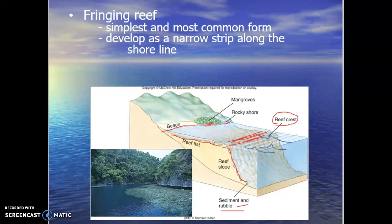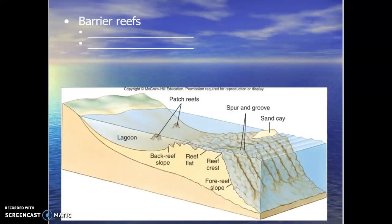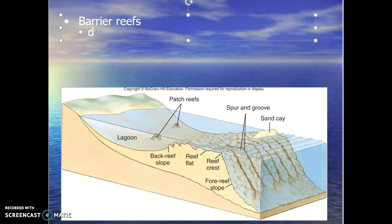It's a constant change — a dynamic environment that is constantly shifting based on environmental conditions. The fringing reef is a narrow strip along the coastline or shoreline, requiring shallow water and good light penetration, and typically there's no influx from a river coming into this area. The next type is the barrier reef, which also develops along shore but much further out.